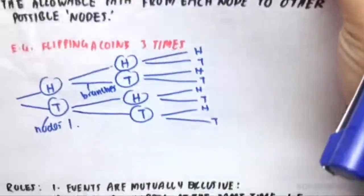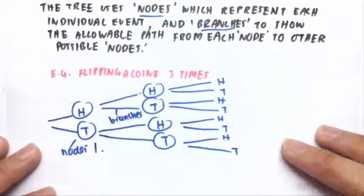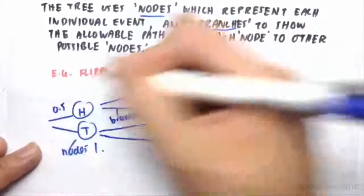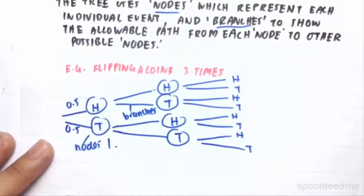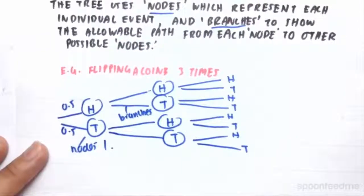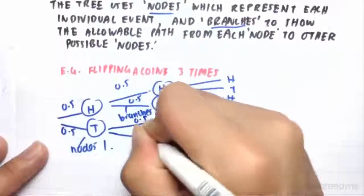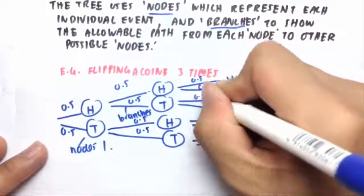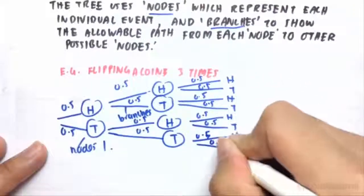So in order to use a probability tree, we also sometimes put the probability of these events occurring on top of these branches. For example, flipping a head, flipping a tail gives us a probability of 0.5 or 50% respectively. And then we go on and we can do that to every single branch. And then that would help us find out the probability of a certain outcome occurring.